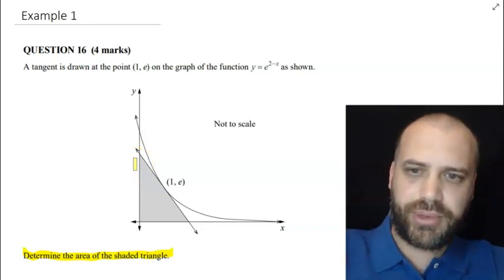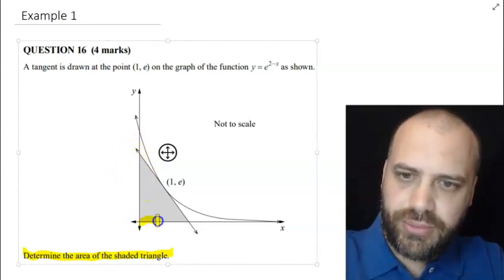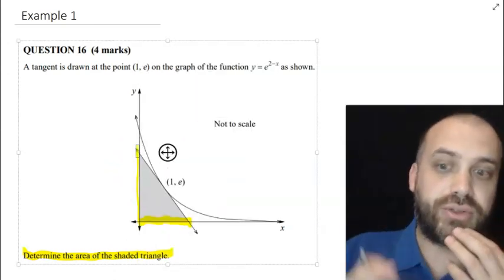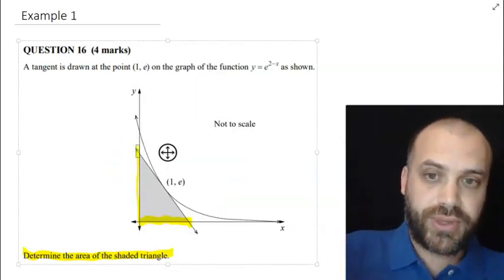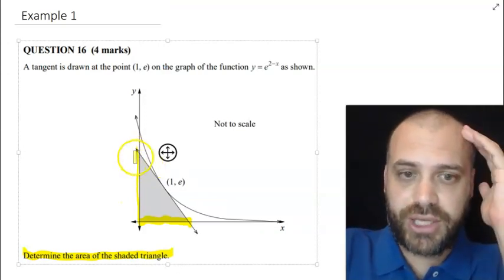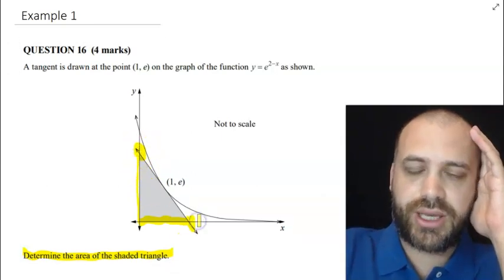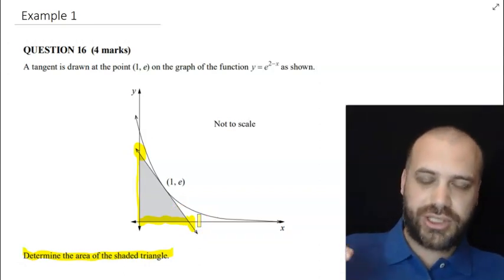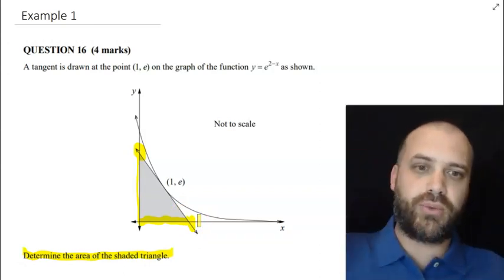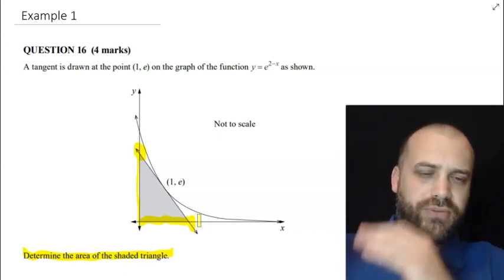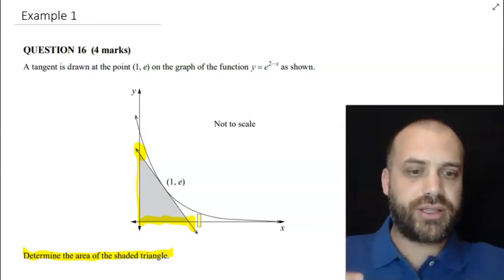I know that area is equal to half base times height. So if I knew the base and if I knew the height, in other words if I knew that coordinate and I knew that coordinate, I'd know the area of the triangle. And then I would come up to here and start looking for information that is going to allow me to find this bit and this bit. That's how I would read that question, starting from essentially the bottom and working my way up. Now it's not quite as linear as that all the time. I'm going to do a few more examples here and show you how I read these questions.